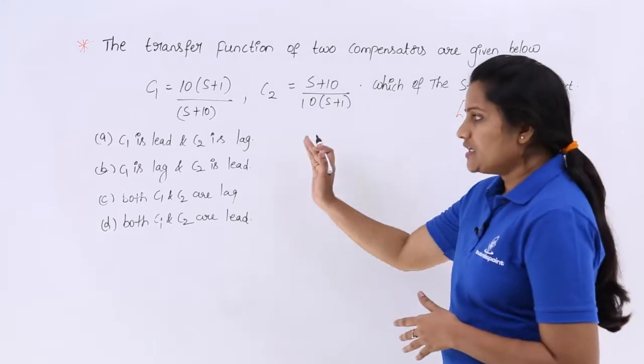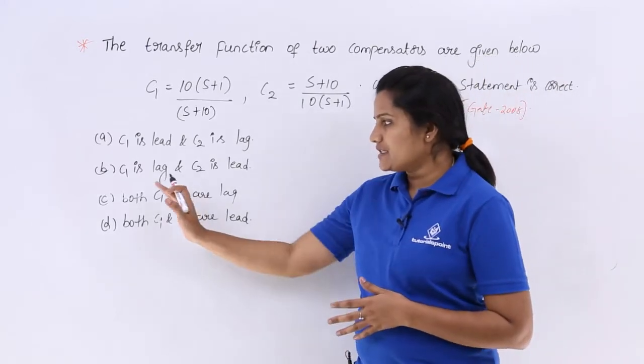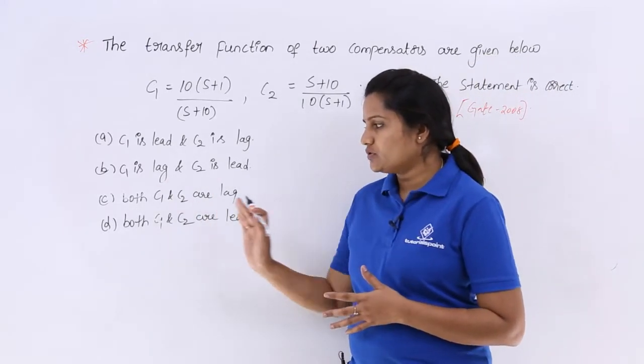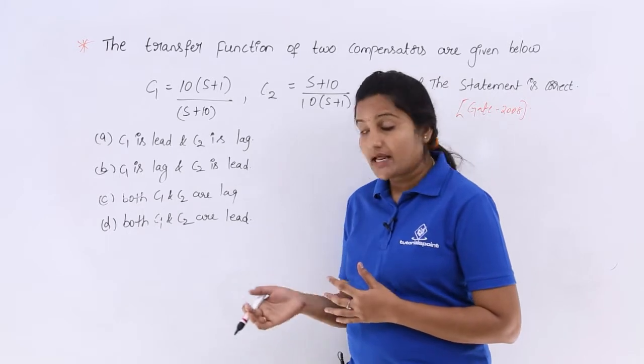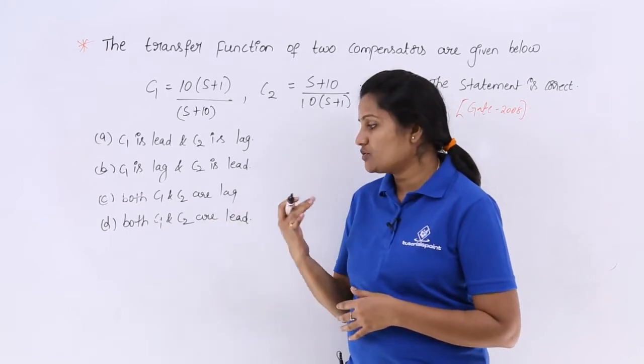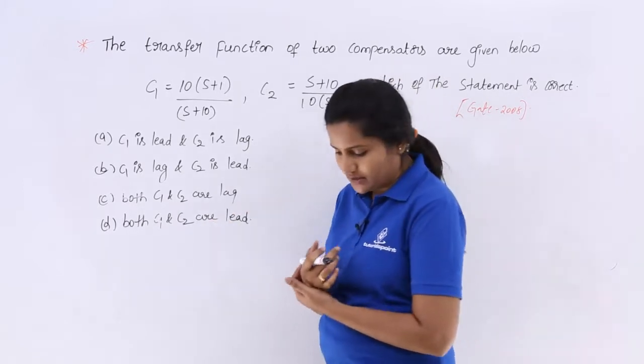The options are: C1 is lead, C2 is lag; C1 is lag, C2 is lead; both C1 and C2 are lag compensators; or both C1 and C2 are lead compensators.